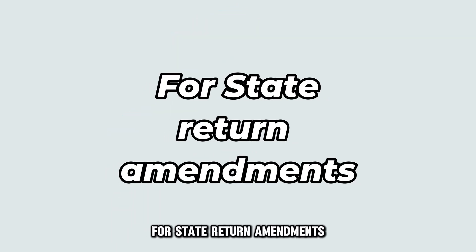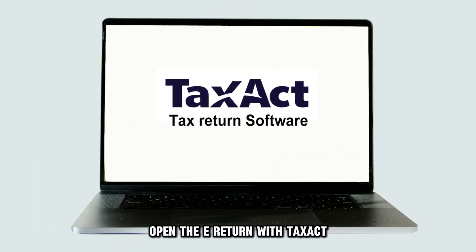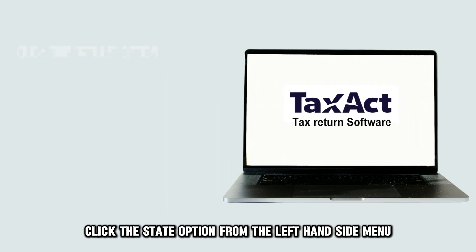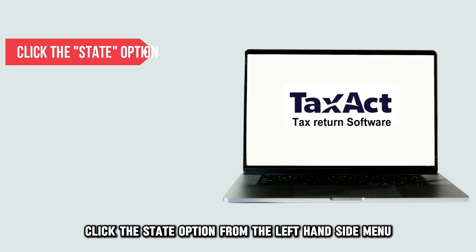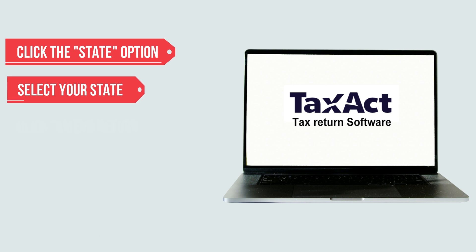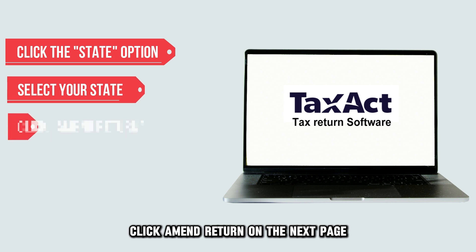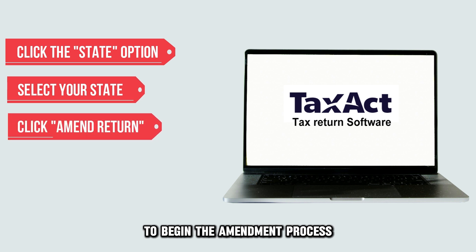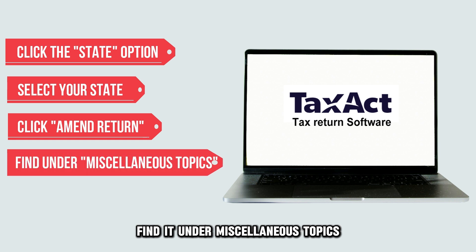For state return amendments, open the return with TaxAct, click the State option from the left-hand side menu, and select your state from the resultant list. Click Amend Return on the next page to begin the amendment process. If you don't see the Amend Return option, find it under Miscellaneous Topics.